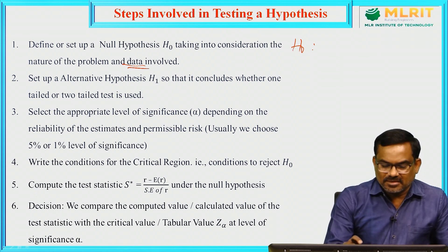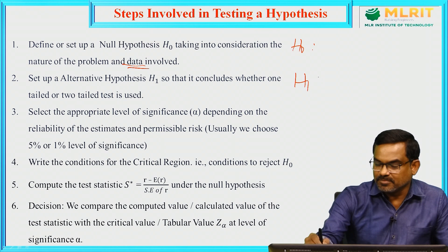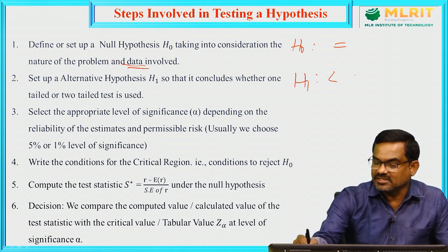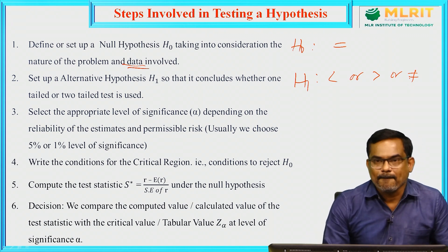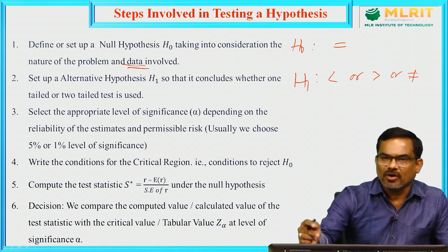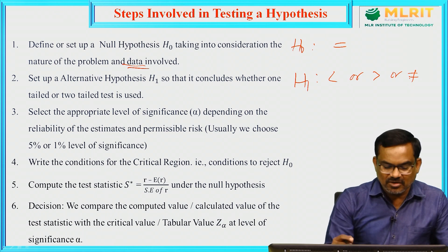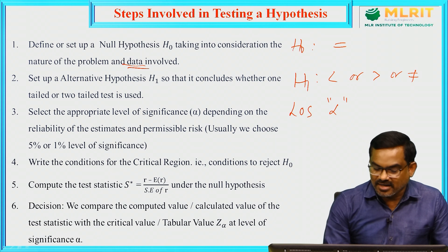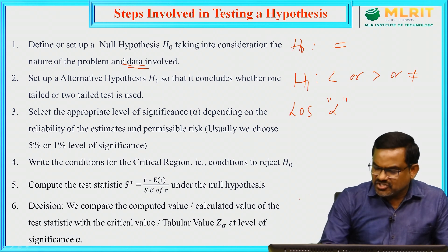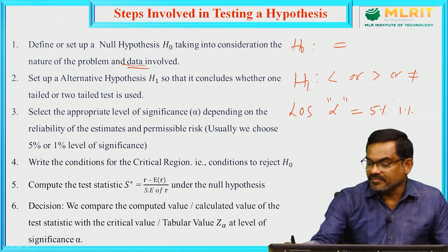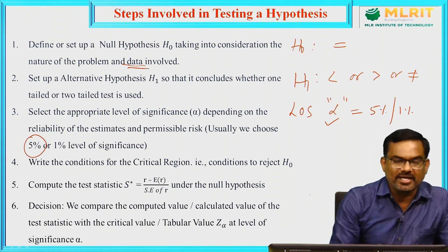The second step is very important — we need to consider H1 against the null hypothesis, and H1 must be in the opposite form. Since H naught uses 'equal to,' we consider less than, greater than, or not equal to. The problem itself will clearly mention or give a hint whether to use a not-equal-to, less-than, or greater-than type. Then in step 3, level of significance alpha — we select the appropriate level based on the reliability of the estimates. In general, 5 percent or 1 percent values are used. Alpha will be given in the problem; if not mentioned, we can consider alpha as 5 percent.